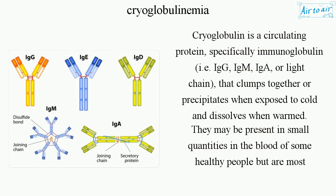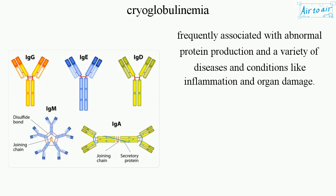Cryoglobulin is a circulating protein, specifically immunoglobulin — IgM, IgA, or light chain — that clumps together or precipitates when exposed to cold and dissolves when warmed. They may be present in small quantities in the blood of some healthy people, but are most frequently associated with abnormal protein production and a variety of diseases and conditions like inflammation and organ damage.